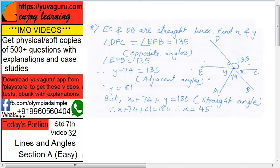In the given figure, EC and DB are straight lines intersecting at F. We have to find X and Y. This angle is given as 135 degrees. So how to find X and Y?